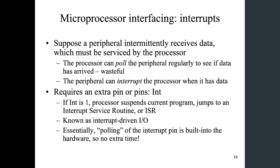Suppose a peripheral intermittently receives data, which must be serviced by the processor. We're talking about two things: a processor and a peripheral device. The peripheral is just a thing outside the microprocessor or microcontroller you need to talk to. The processor can get the data by using polling — it has to use instructions to keep checking the status of the peripheral: do you have data? If you do, then we'll go ahead and read. But if you do the polling, you're actually going to spend a lot of CPU cycles on doing that instead of doing something more useful.